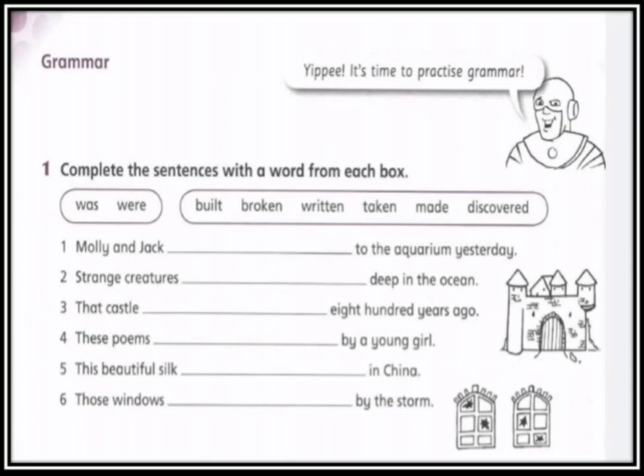Number three: that castle — 800 years ago — castle مفرد، إذن سوف نضع 'was built'. Now number four: these poems — by a young girl — poems جمع، إذن نحن نستخدم 'were written'، لأنها قصائد تم كتابتها من قبل فتاة شابة، فالفعل 'written' وهو بالتصريف الثالث أكيداً. Five: this beautiful silk in China — beautiful silk مفرد، إذن نستخدم 'was made' in China.